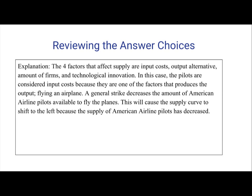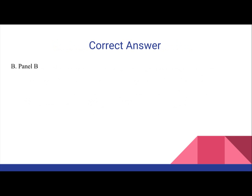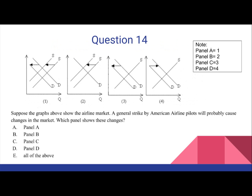This will cause the supply curve to shift to the left because the supply of American airline pilots has decreased. Therefore the correct answer is panel B, which is a shift of supply to the left.